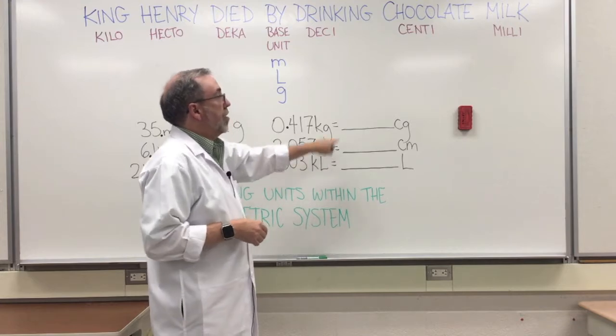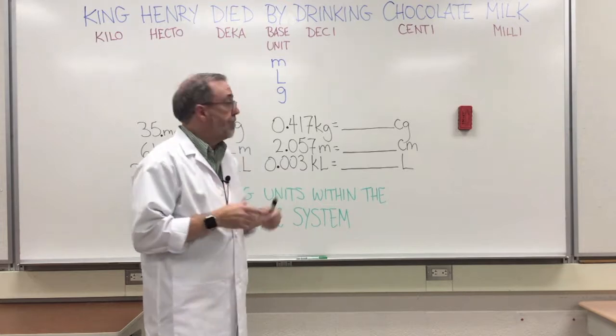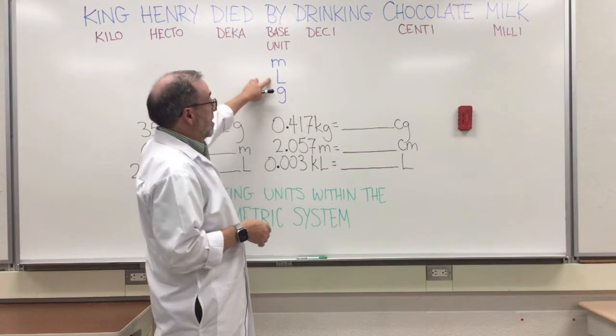So if you see a problem here like this one, 2.057 with an m, that's meter, it's not milli. It would only be milli if there were two m's - it'd be millimeter. So just be aware of that.